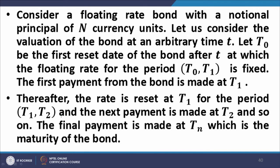Floating rate bond valuation: consider a floating rate bond with a notional principal of N currency units. Let us consider the valuation of the bond at an arbitrary time small t. Let t0 be the first reset date of the bond after t, at which the floating rate for the period t0 to t1 is fixed. At t0 we are fixing the interest rate that would operate for the period from t0 to t1. At t1 the actual interest is paid, and the interest rate for the next period from t1 to t2 is fixed at t1.